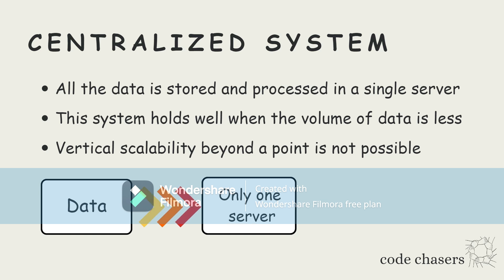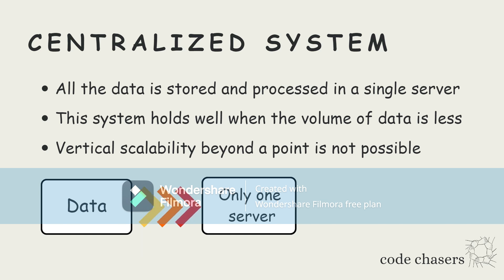So what if the volume of data goes on increasing day by day? In a centralized system, we have two options: first, we can upgrade the server; second, we can increase the hardware capacity of the equipment. These two options are called vertical scalability. But vertical scalability beyond a point is not possible.